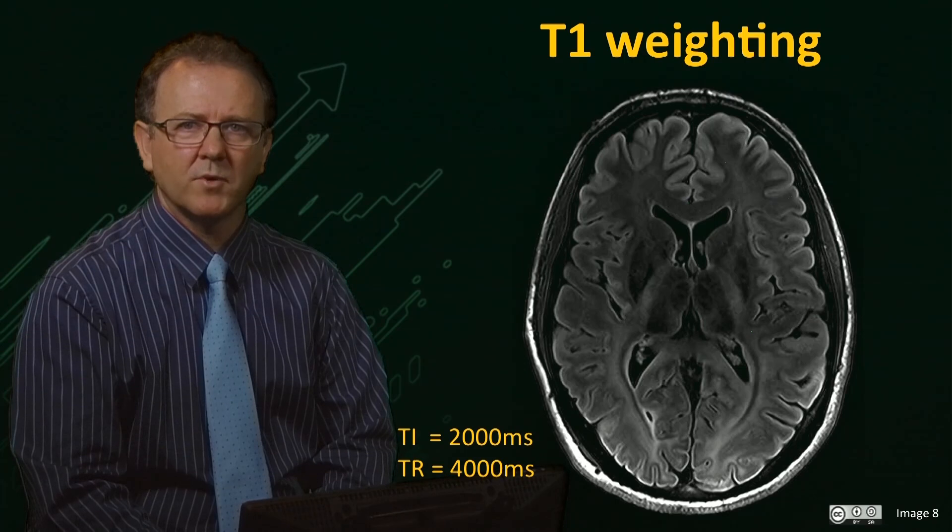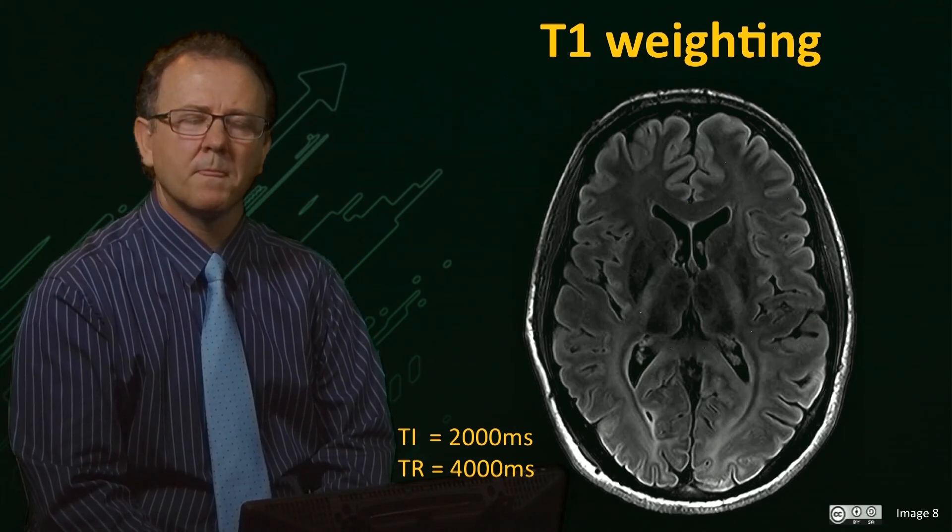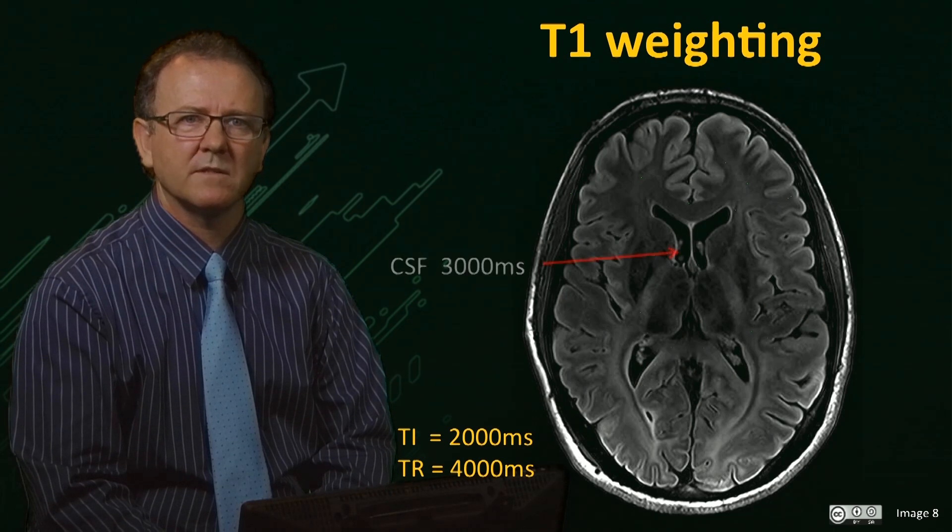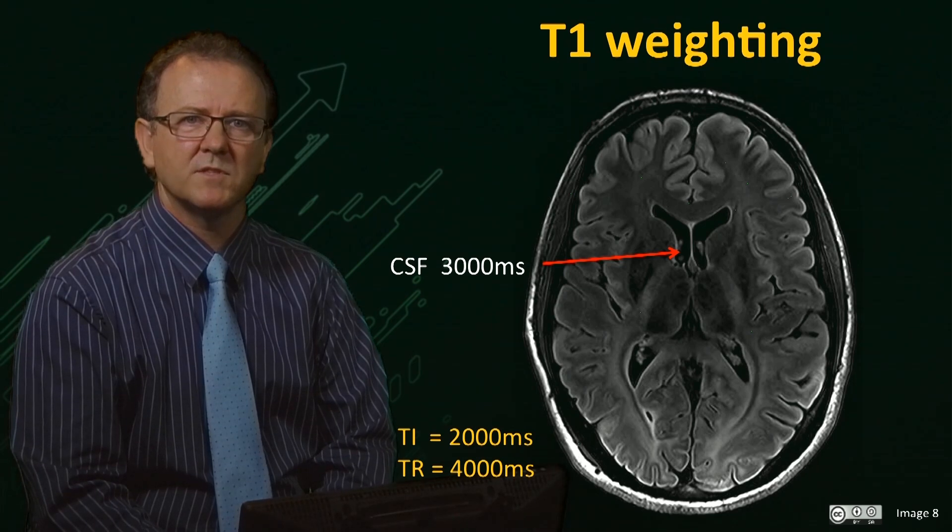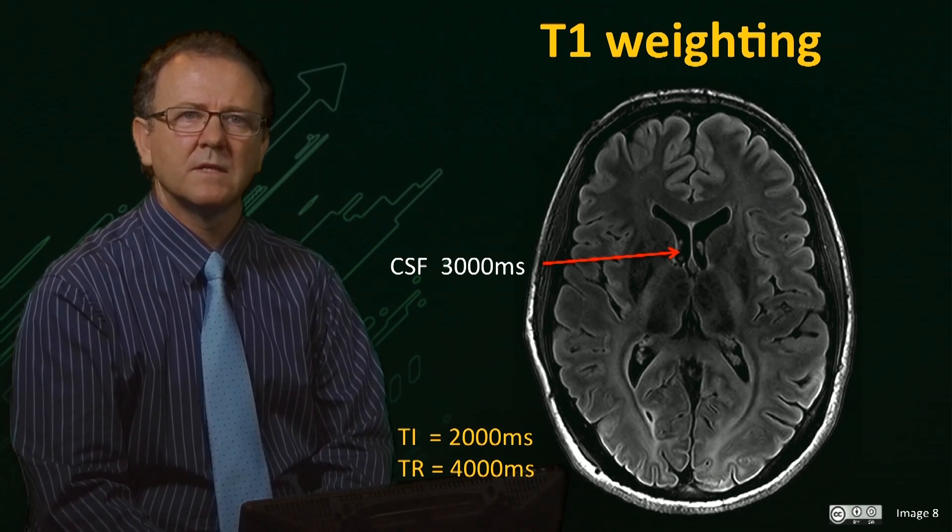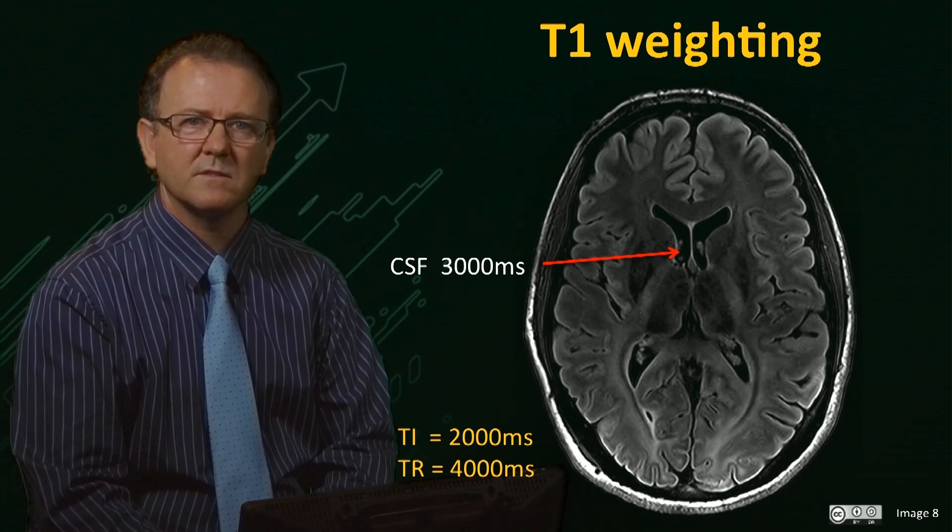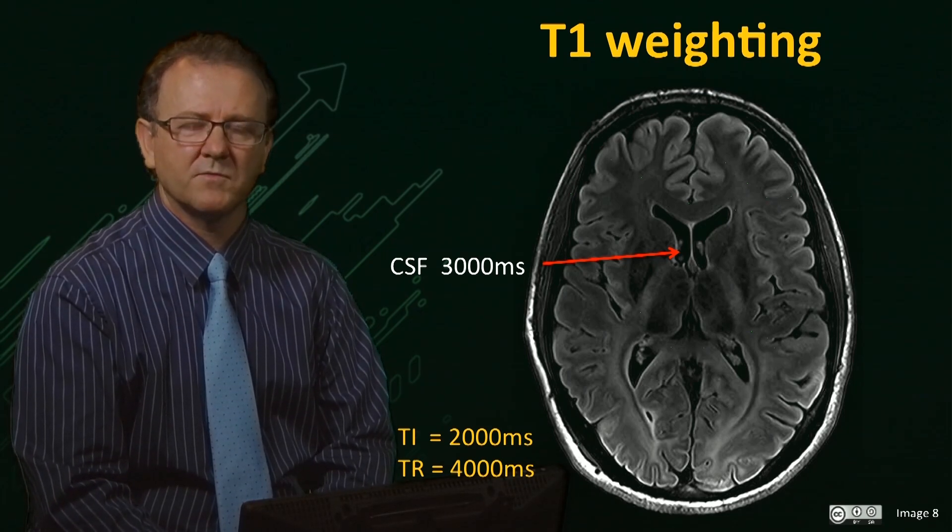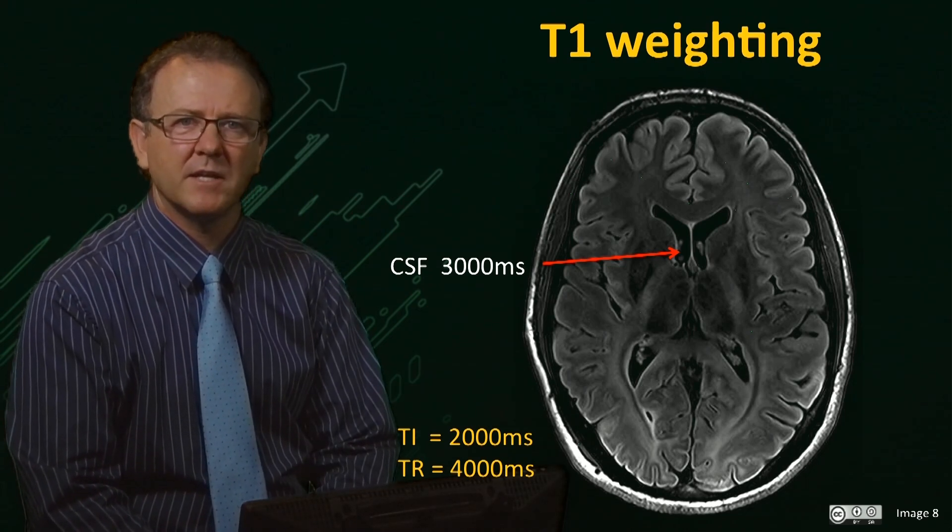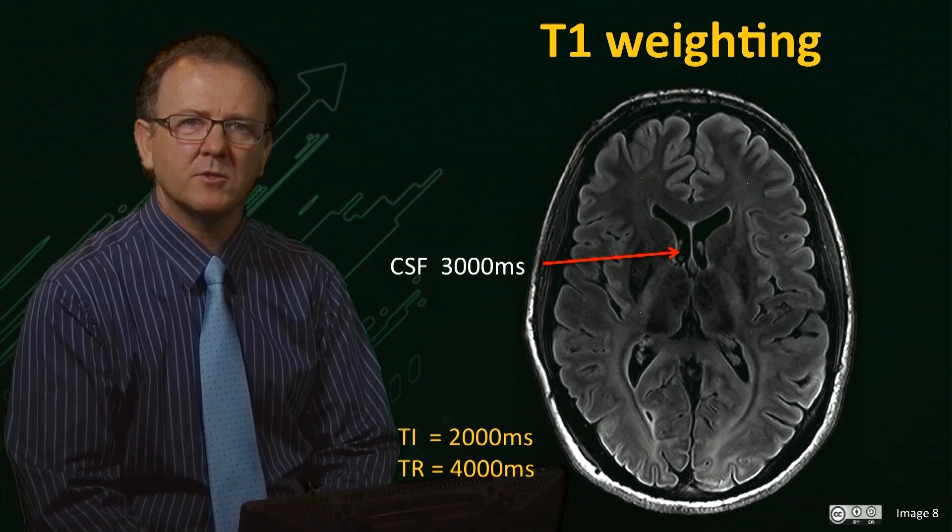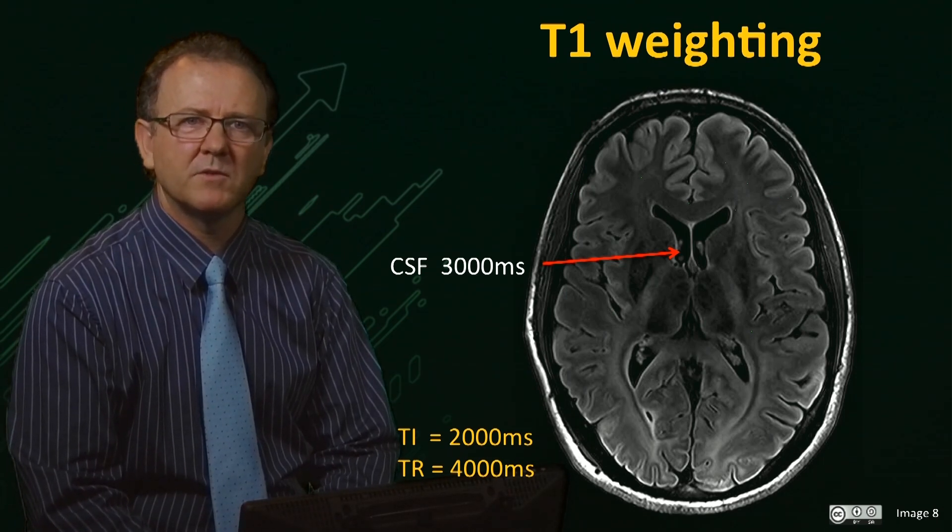Here is an example of a T1 weighted brain image, acquired using an inversion recovery sequence. The inversion time was 2 seconds and the recycle time was 4 seconds. This time, we see that the CSF signal is virtually zero. The T1 of CSF at this field strength is about 3 seconds, and so is nulled at this value of TI and TR. The fat around the skull is bright, since it has a short T1, and because grey matter and white matter have different T1 values, they appear with different intensities. This method is sometimes used to suppress the signal from fat and produce a water only image.